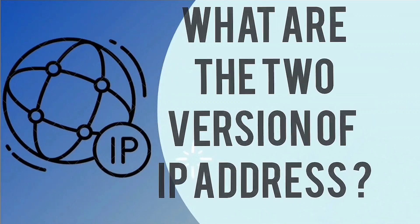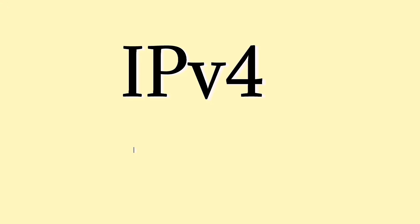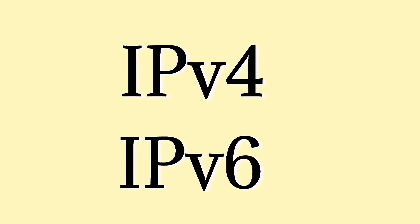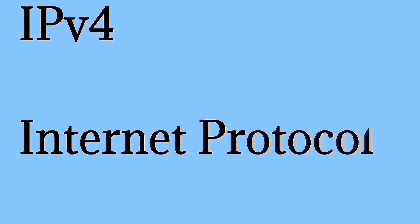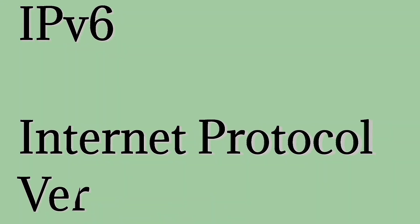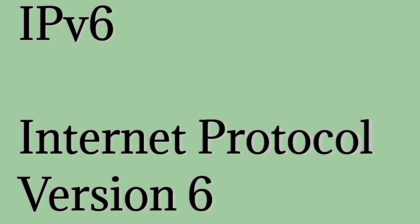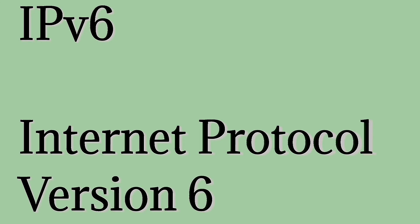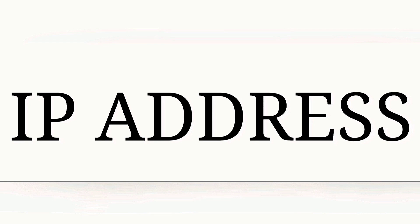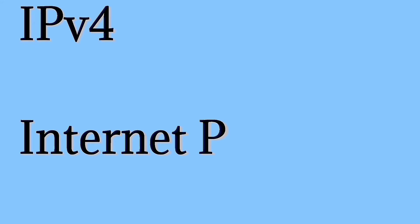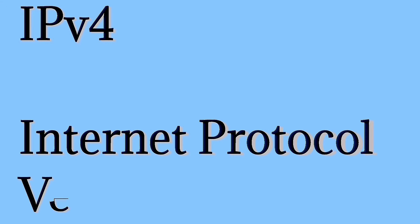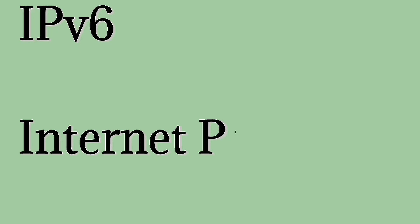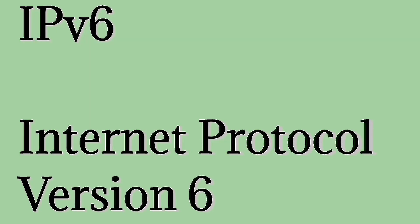What are the two versions of IP address? The two versions of IP address are IPv4 and IPv6. IPv4 stands for Internet Protocol Version 4. IPv6 stands for Internet Protocol Version 6 and is the latest version. In IPv4, a unique IP address cannot be allocated to every individual in the world, but this problem can be solved in IPv6.